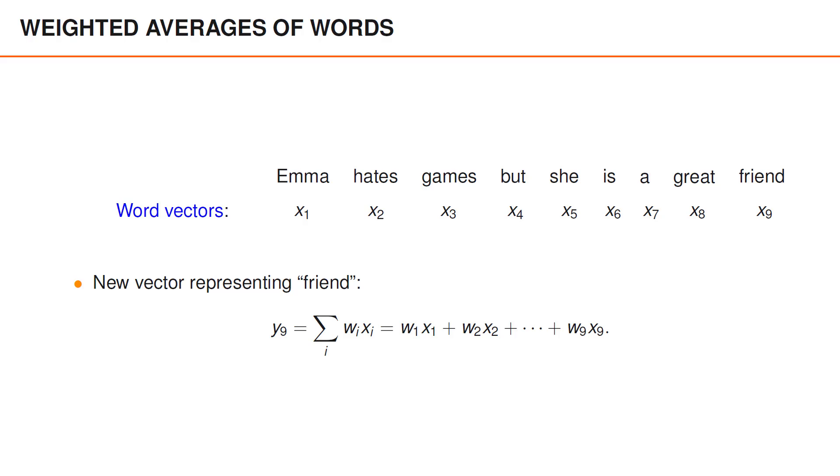For instance, if we want to compute a new word embedding for the word friend in this sentence, we could produce weights w1 to w9 and then compute the average w1 times x1 plus w2 times x2 and